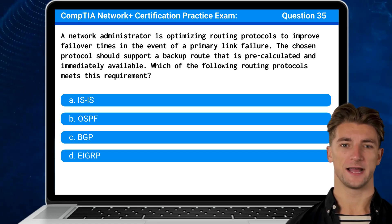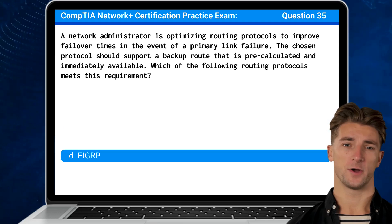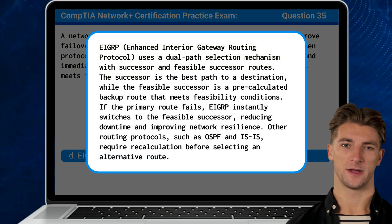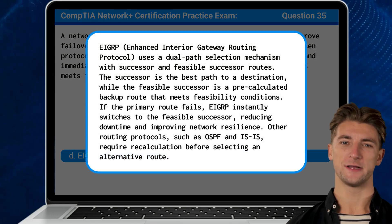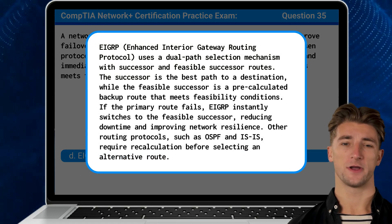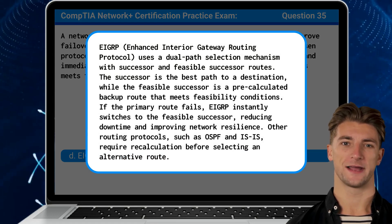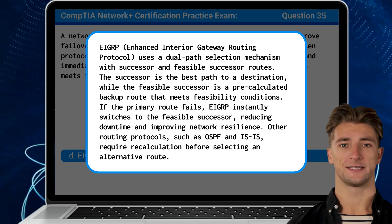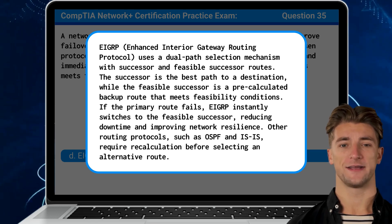The answer is D: EIGRP. EIGRP, or Enhanced Interior Gateway Routing Protocol, uses a dual-path selection mechanism with successor and feasible successor routes.